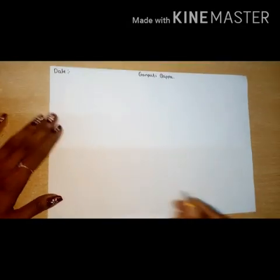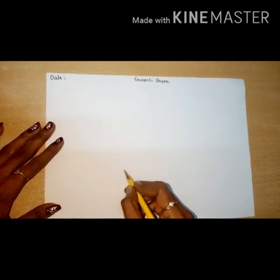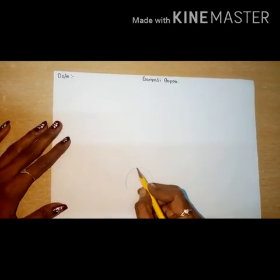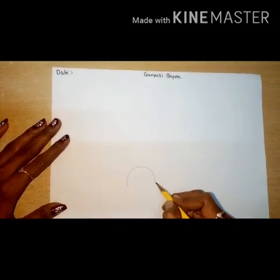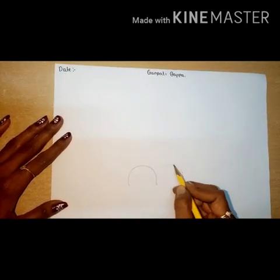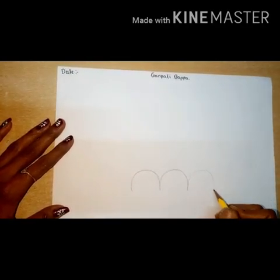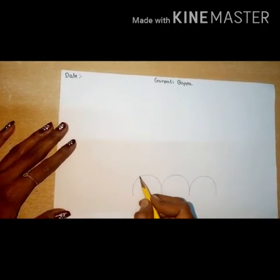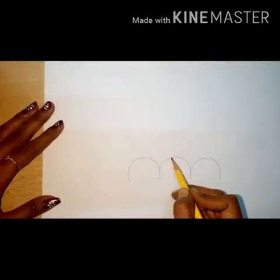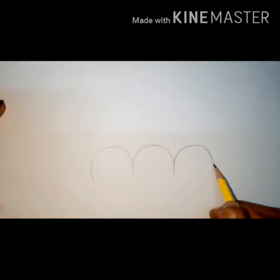Draw with me. First, keep the pencil here and draw a big bumpy line like this — like a half circle. Again one more, and again here also. You have to draw three big bumpy lines.